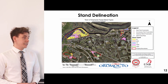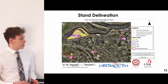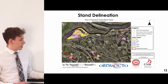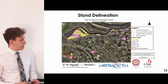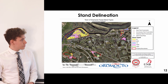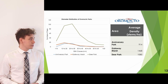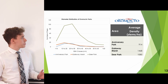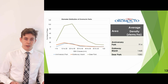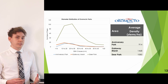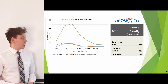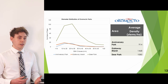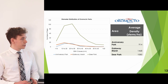From this we were able to develop a stand delineation map. For those unfamiliar with this land base, the top left corner is Deer Park, the bottom left corner is Anniversary Park, and the bottom middle is Gateway Marsh. From our initial inventory, we also wanted to determine the stage of succession. Based on diameter distribution and average density, we found the stands are in or close to the stem exclusion phase, also indicated by an almost fully closed canopy.